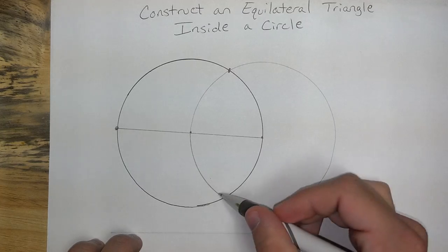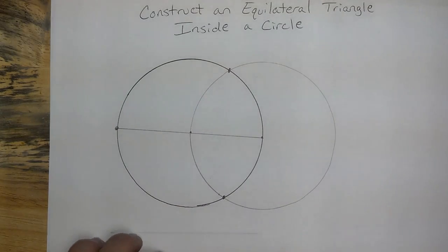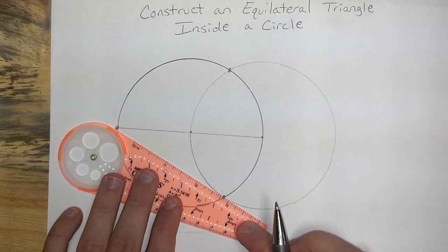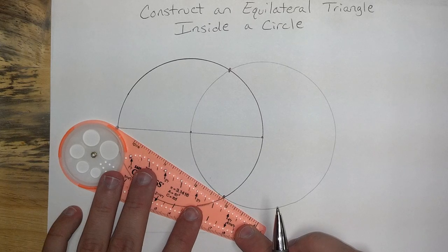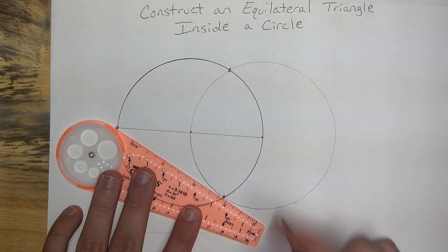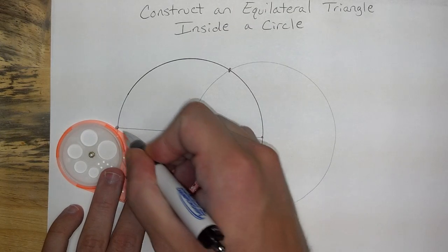And it's as simple as that. These three points, if we connect them, create an equilateral triangle right inside of the circle.